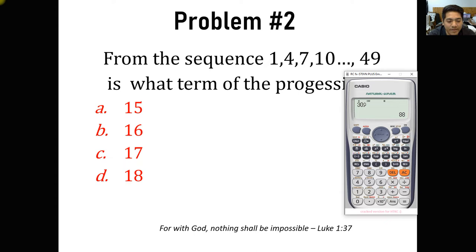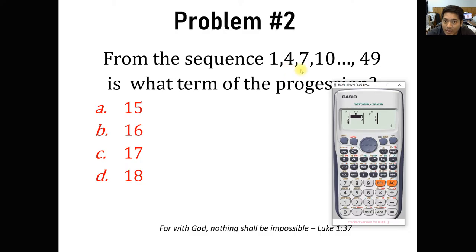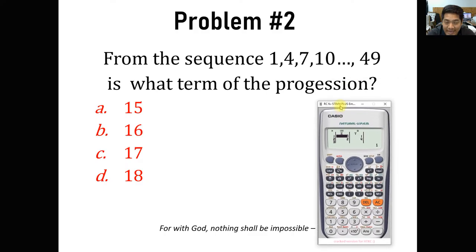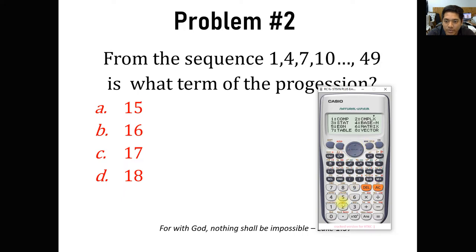Still, we will be using the same concept. So shift stat, and we have the data. The example is the same, only now we are going to find what term is 49. Again, storing — just in case the problem is different, you have to store the first two terms. Mode stat, 2 a+bx. For the first term, x equals 1, y equals 1. For the second term, y equals 4. In the calculator, x is the term number and y is the value of that term.